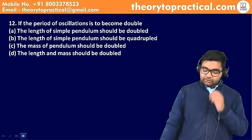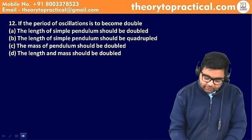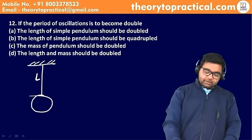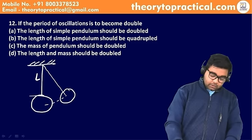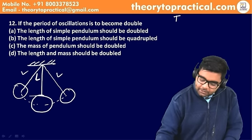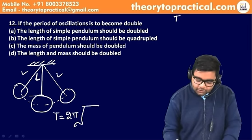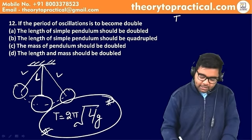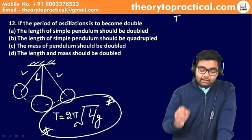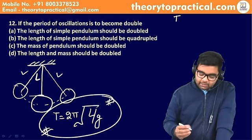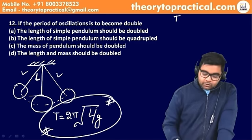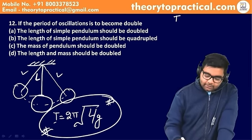अगला question: if the period of oscillation is to be doubled, then the length of the simple pendulum — Simple pendulum का formula है: time period T = 2π√(L/g)। यह 11th class का basic formula है। Question में कह रहा है कि time period को double करना है — देखते हैं।